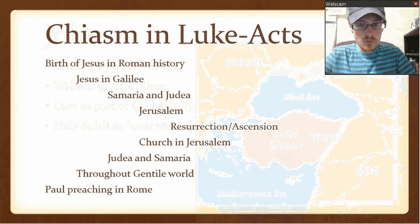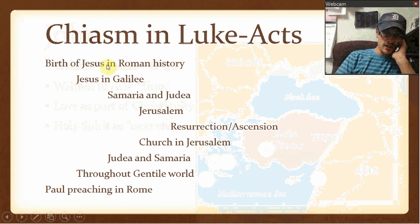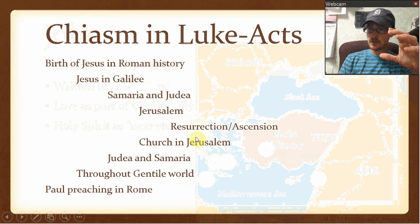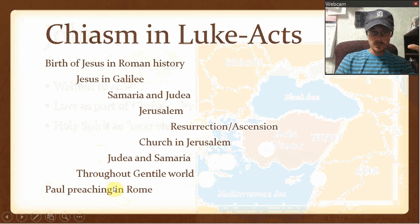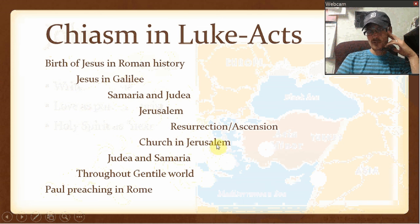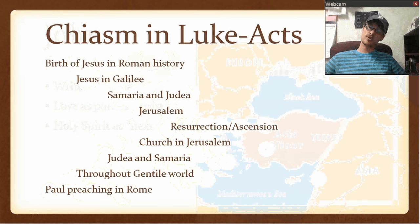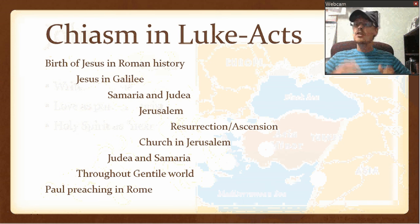That takes us to the kind of outline of Luke-Acts. If you look through Luke-Acts, or if you remember me talking about chiasms — and I have an appendix in these videos talking about chiasm — you have: Jesus born in Roman history, Paul preaching in Rome; Jesus in Galilee, the church throughout the Gentile world; Jesus in Samaria and Judea, the Christians in Judea and Samaria; Jesus in Jerusalem, the church in Jerusalem. At the center: the resurrection and the ascension. What changed Peter from the person who denied Jesus into the person through whom 3,000 people were saved in a single day? The empowerment of the Holy Spirit to witness.